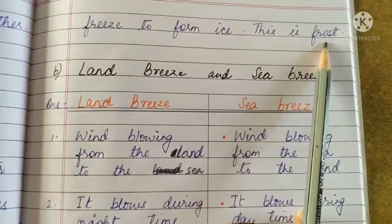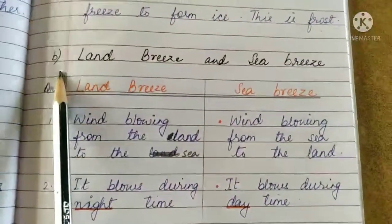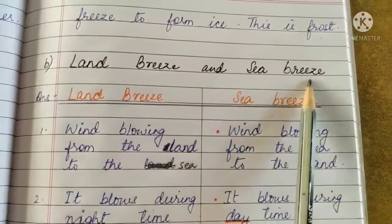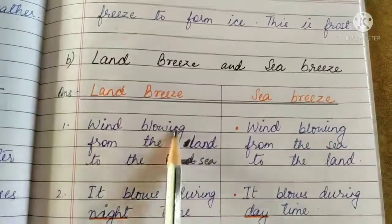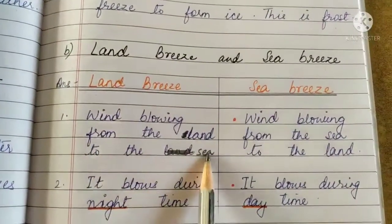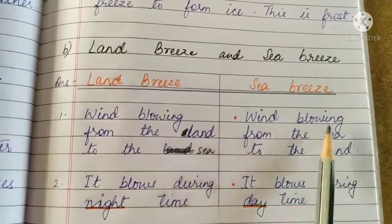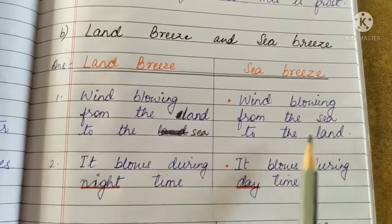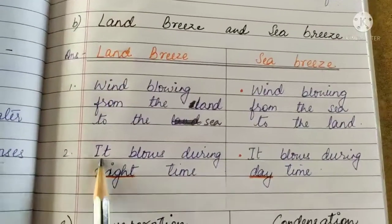When the nights become very cold, dew drops freeze to form ice — this is frost. Frozen dew drops are known as frost. B. Land breeze and sea breeze. Land breeze: wind blowing from the land to the sea. Sea breeze: wind blowing from the sea to the land.